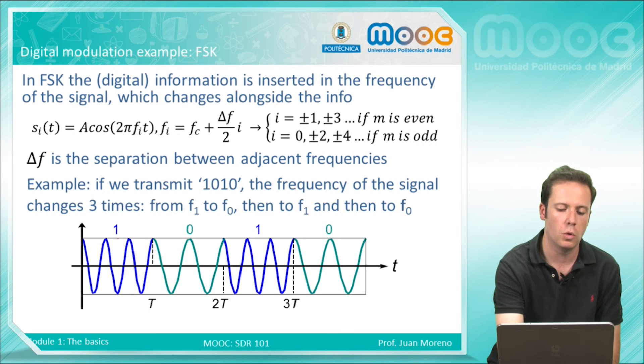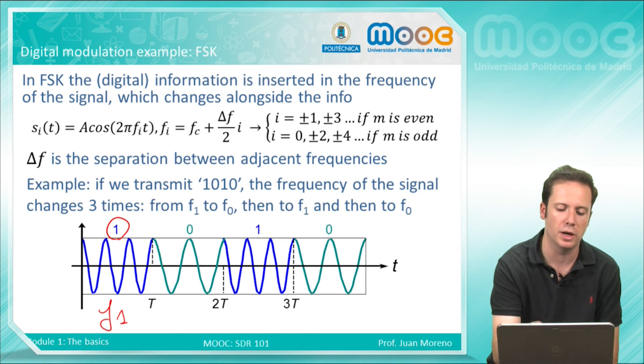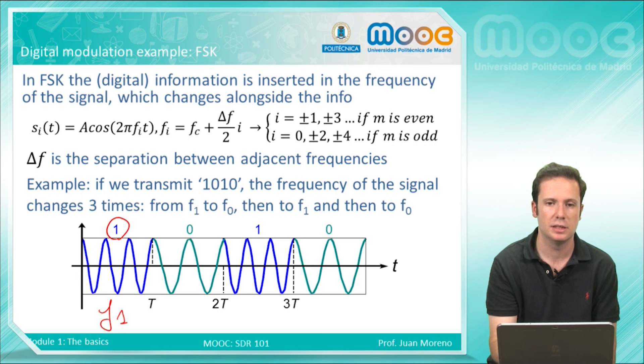So, if we transmit 1, you will have a signal, a sinusoidal signal with some frequency, for example f1. If you transmit a 0, you will have the signal in green with another frequency.